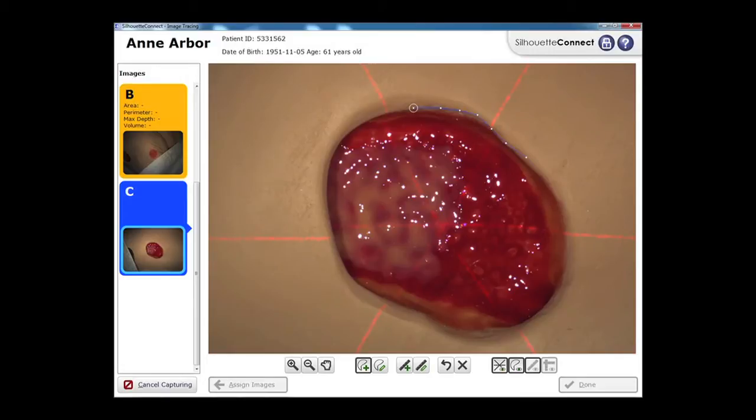Now as well as clicking like this I can also hold the mouse button and trace around the edges. So you can do whatever method you prefer or in fact you can do both methods. We go around the wound like this and we need to finish by clicking on the circular target.